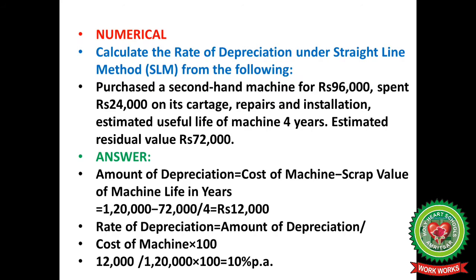The formula for calculating the amount of depreciation is: cost of the machine plus any amount spent on repair, installation, minus scrap value or residual value, divided by useful life of the asset. Here, 96,000 plus 24,000 gives us 1,20,000. So 1,20,000 minus 72,000 scrap value, divided by 4, equals Rs 12,000. This is the amount of depreciation.